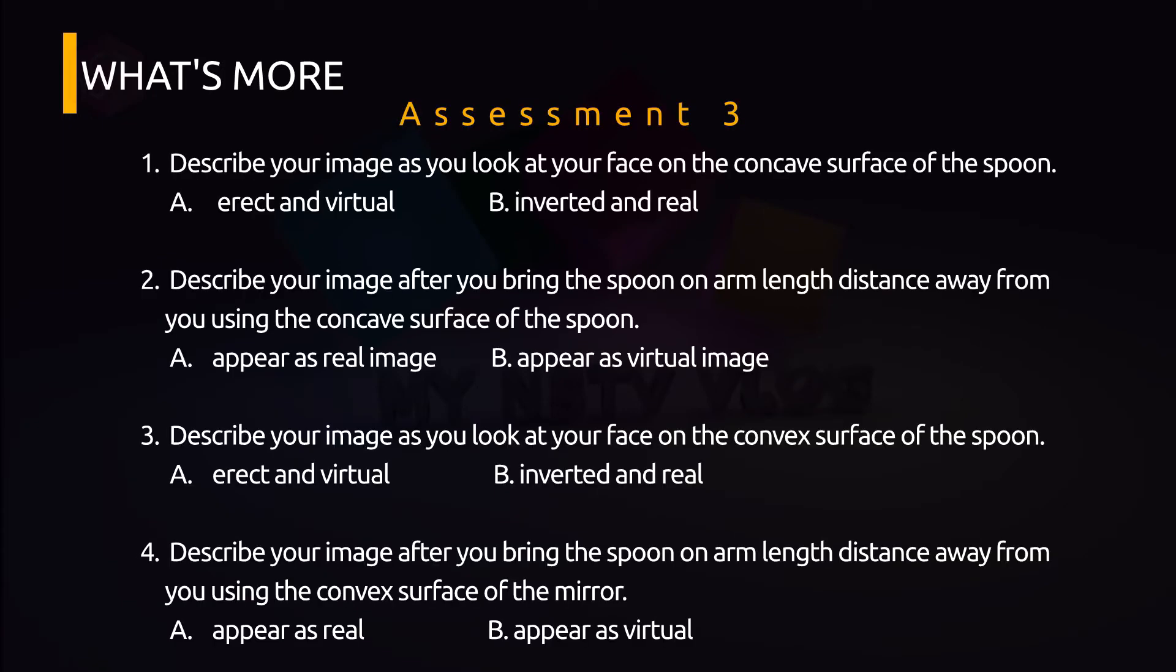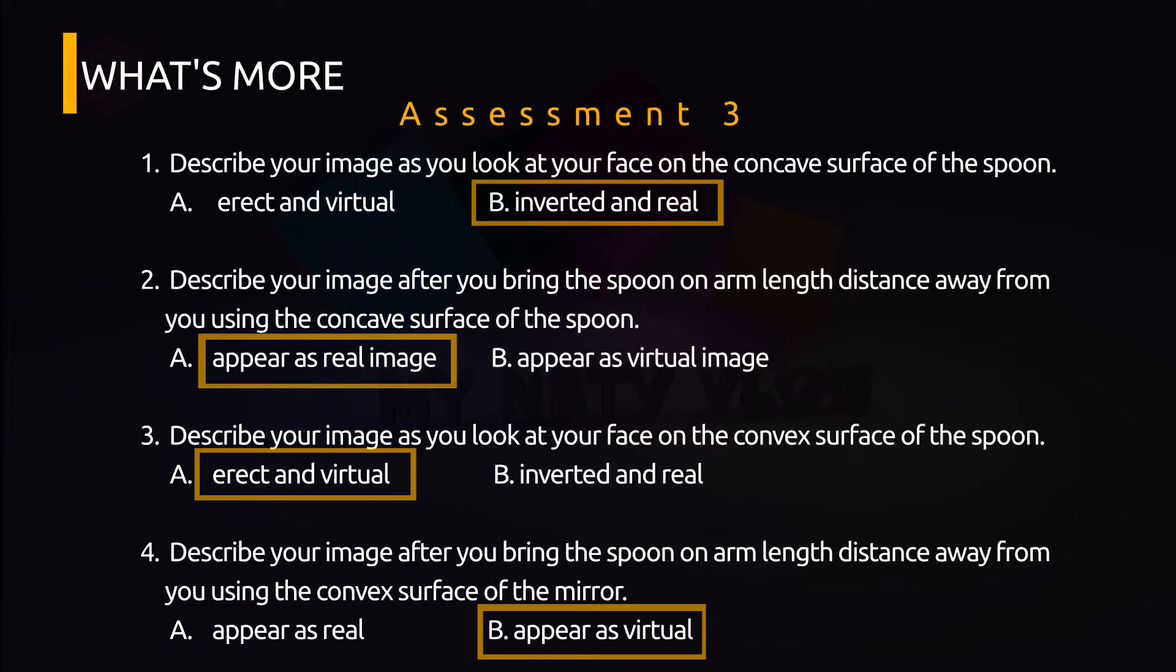What's more? So let's have the assessment number 3. Let's answer the questions 1 to 4. Let's check your answers. For number 1, as you look at the concave surface of the spoon, your image is inverted and real. For number 2, if you bring the spoon an arm-length distance away from you using the concave surface of the spoon, it appears real image. For number 3, as you look at your face on the convex surface of the spoon, your image is erect or upright and virtual. Lastly, for number 4, if you bring the spoon an arm-length distance away from you using the convex surface of the mirror, it appears virtual. So did you get it right? Perfect!